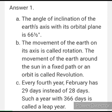Answer 1: The angle of inclination of the Earth's axis with its orbital plane is 66 and a half degrees. The movement of the Earth on its axis is called rotation. The movement of the Earth around the Sun in a fixed path or orbit is called revolution. Every fourth year, February has 29 days instead of 28 days; such a year with 366 days is called a leap year.